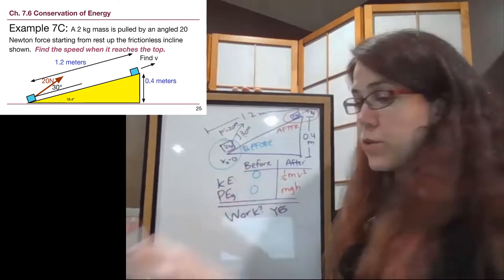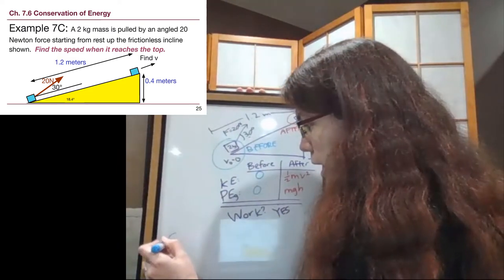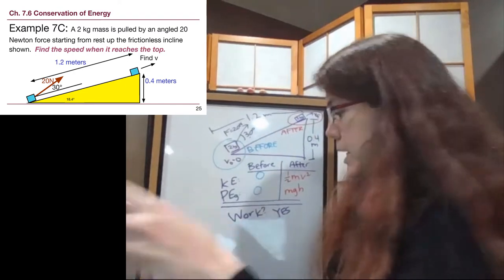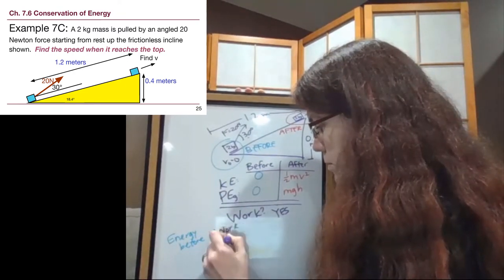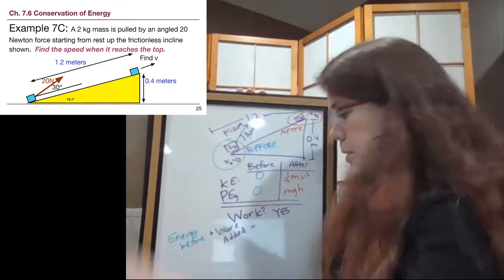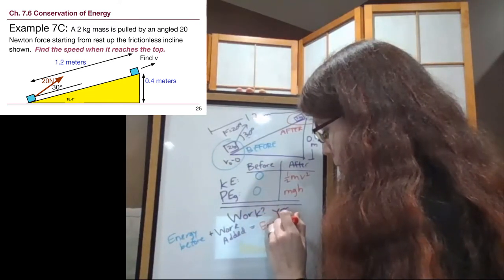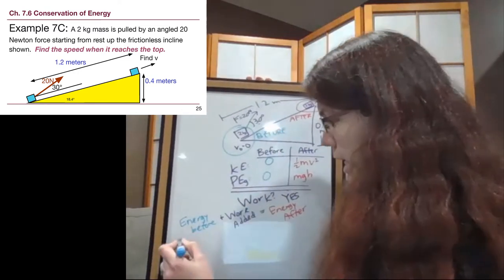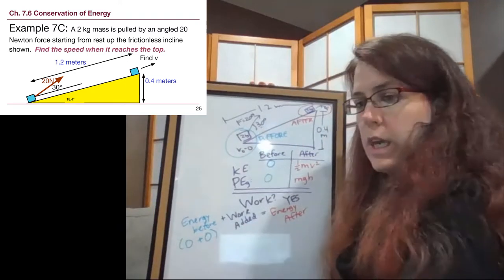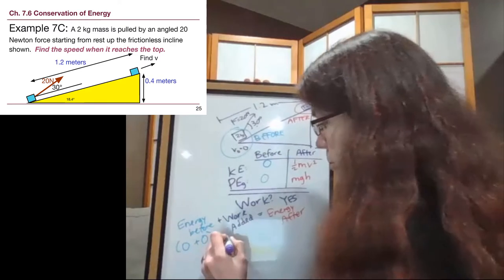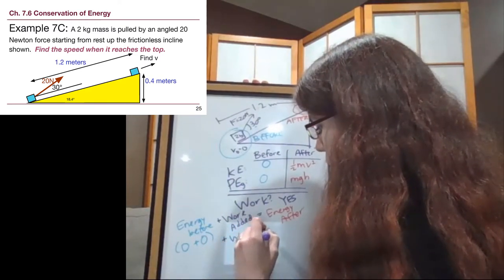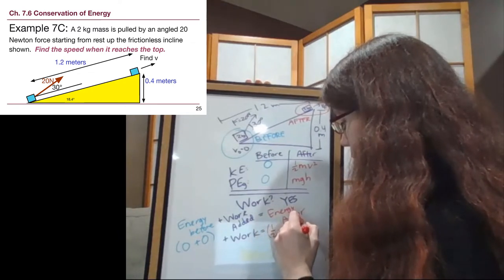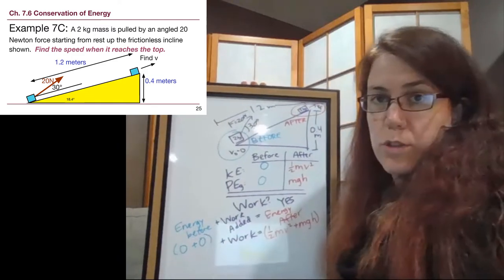So, if we look, we can write out our equation. So, energy before plus work added equals energy after. In the energy before column, we look and we see that we have zero plus zero. And so even if we weren't quite sure about the work term, if we start with no energy, it has to be coming from somewhere. And so it comes from that work term. And we're just going to write out the word work before we continue. And then in the after column, we have one-half mv squared plus M, G, H. And those are the two terms that we have in the after column.